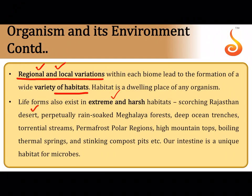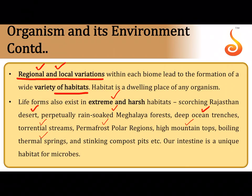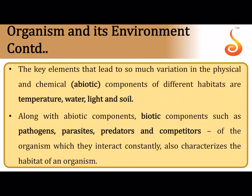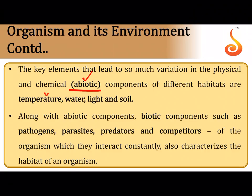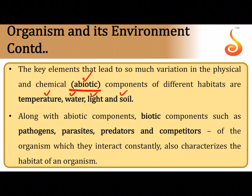The rotation of our planet creates day and night, and the tilt in our planetary axis causes alteration in intensity and duration of temperature, responsible for seasons and annual variation in rainfall. There are not only large geographical area variations but also local variations creating a variety of habitats for different organisms. Life can exist in extreme and harsh conditions — in deserts, rain-soaked Meghalaya forests, deep ocean trenches, torrential streams, permafrost polar regions, high mountain tops, boiling thermal springs, and stinking compost pits.